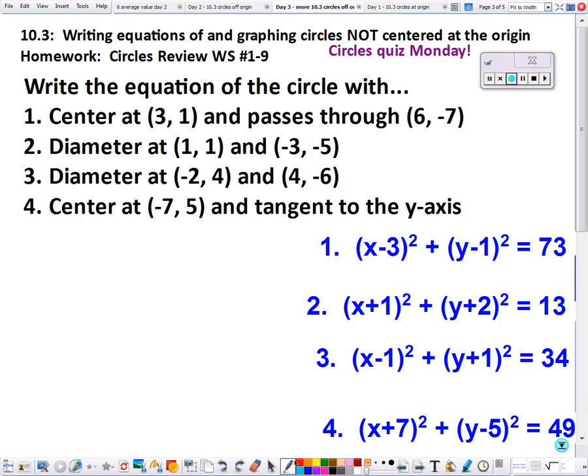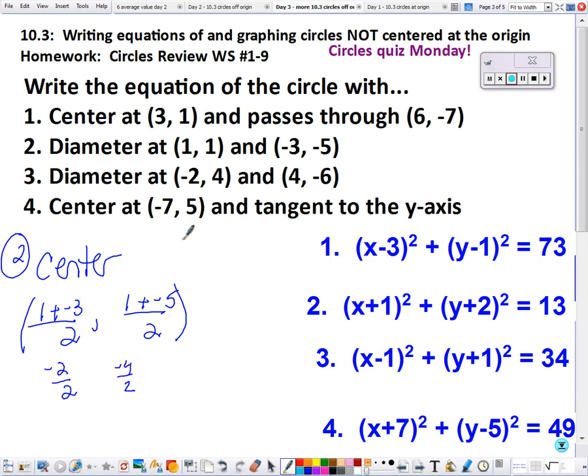So if the diameter goes through the entire circle and we have this point, we can find the center by finding the midpoint. So if I add up the x values divided by 2, add up the y values divided by 2, our center is at (-1, -2).